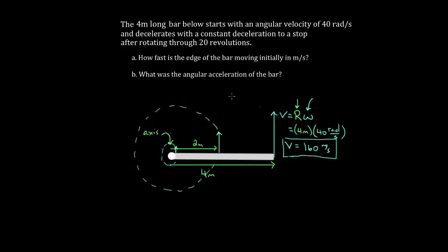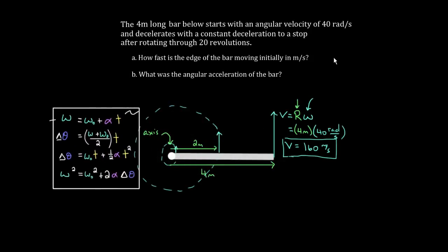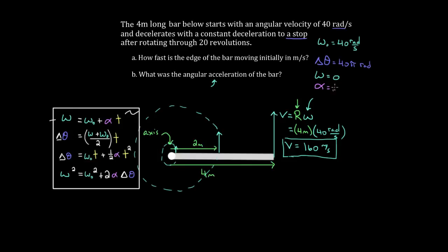Part b asks: what was the angular acceleration of the bar? We'll use a kinematic formula. We know omega-initial is 40 radians per second. We're told it rotated 20 revolutions, so delta-theta is 20 times two-pi, which equals 40-pi radians. Our third known: it decelerates to a stop, which means omega-final equals zero. We want to find alpha. The variable left out of our knowns and unknowns is time — I was neither given the time nor asked to find it — so I look for the formula that doesn't involve time.